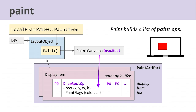Now we understand the geometry of our layout objects and we're ready to paint them. Paint is recording a list of paint operations. Paint ops are where we start to get things that look like graphics API calls — a paint op might be something like draw a rectangle, draw a path, draw an image, or draw a blob of text, with parameters for coordinates and colors. These paint ops are wrapped in things called display items that have pointers back to the layout objects, and that whole thing is wrapped up in a container called a paint artifact, which is the output of the paint stage. Notice we're just building a recording of the paint ops that can be played back later — we're not actually executing them yet.